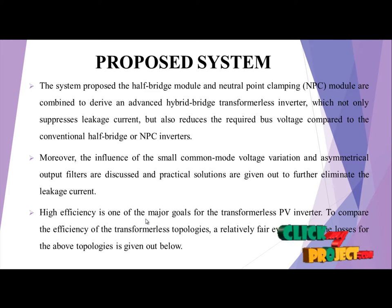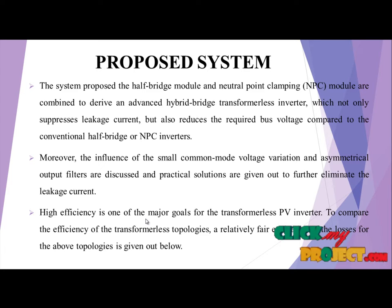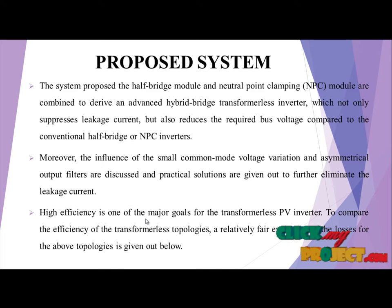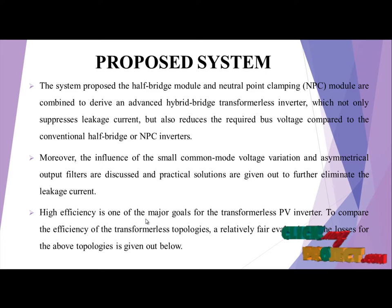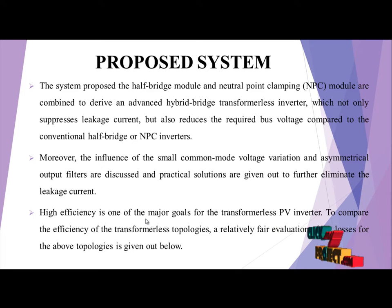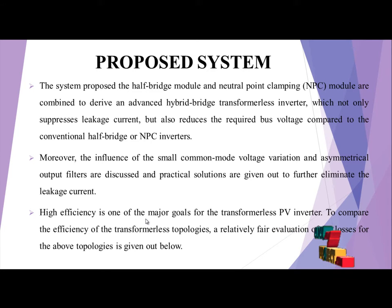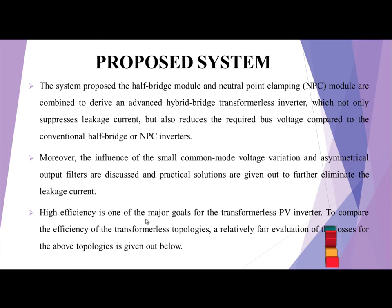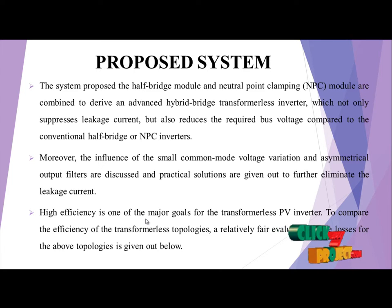Proposed system: In this half-bridge and neutral point clamping model combined derivative, the advanced hybrid bridge transformerless inverter not only suppresses leakage current but also reduces the required bus voltage compared to the conventional half-bridge NPC inverter. Moreover, the influence of small common mode voltage variation and asymmetrical output filter are discussed, and practical solutions are given on how to further eliminate the leakage current. High efficiency is one of the major goals of the transformerless PV inverter. A relatively fair evaluation for the losses of the topologies is given.